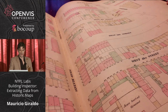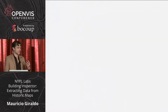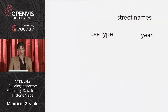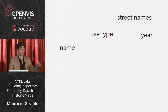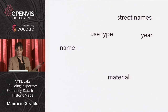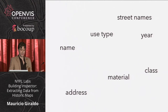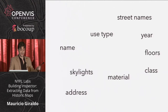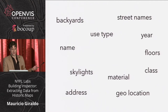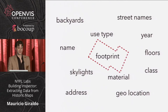It looks like a very simple map — a few rectangles, letters and colors. But in it there's lots of data. We know the year of the map, street names, the use type of the building — commercial or residential — the name (some cathedrals or slaughterhouses are named), the material color-coded as wood, brick, or brownstone, the class of material, the address, skylights in the roof (important for the fire department), backyards and back lots, the geographic location, and the building's footprint shape.